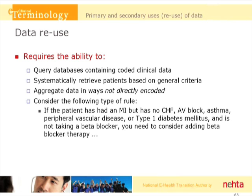Imagine that you have a decision support rule that says that if the patient has had a myocardial infarction but has no congestive heart failure, no AV block, no asthma or peripheral vascular disease, no type 1 diabetes, and they're not taking a beta blocker, then you should consider adding beta blocker therapy.